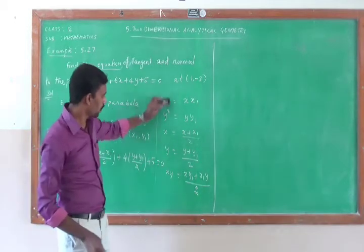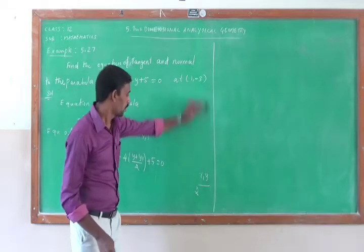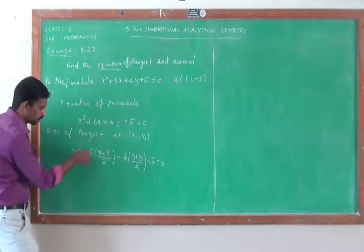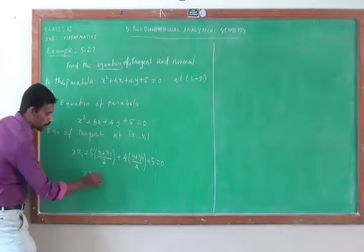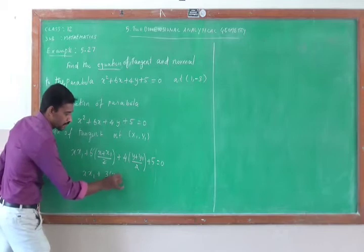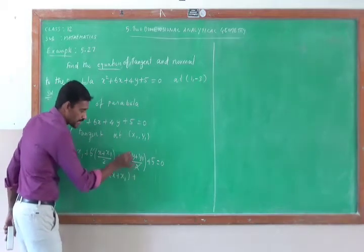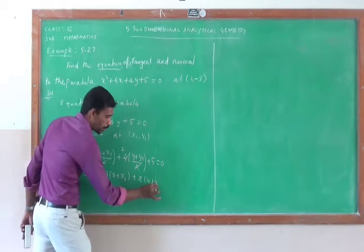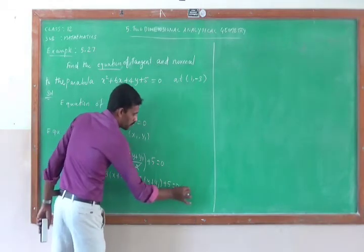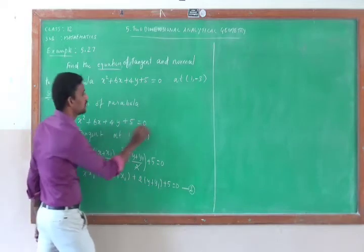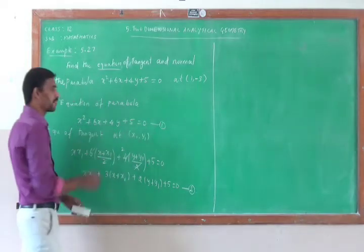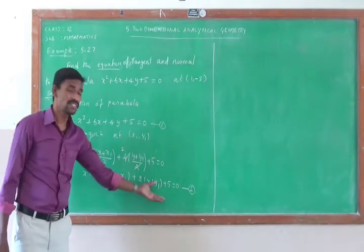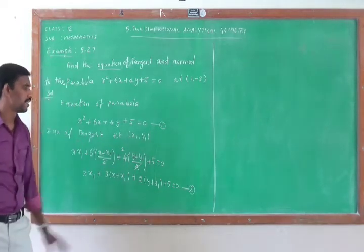Simplifying: xx₁ plus — canceling 6 by 2 gives 3 — into (x plus x₁), plus — canceling 4 by 2 gives 2 — into (y plus y₁), plus 5 equal to 0. This is equation 2. This is derived from the given parabola, equation 1, by substituting x squared as xx₁.